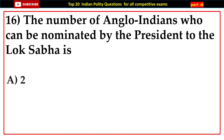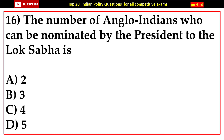Question number sixteen: The number of Anglo-Indians who can be nominated by the President to the Lok Sabha is — options: A) 2, B) 3, C) 4, D) 5.